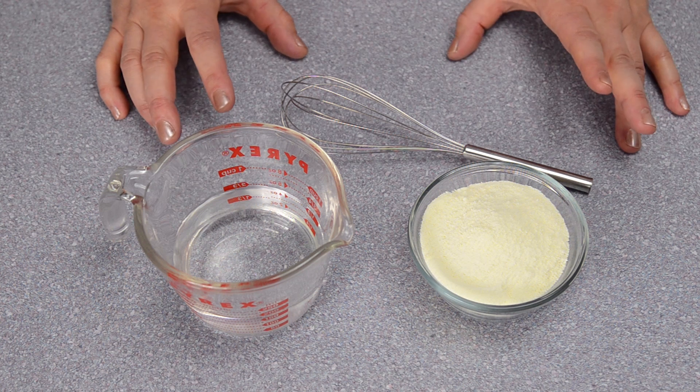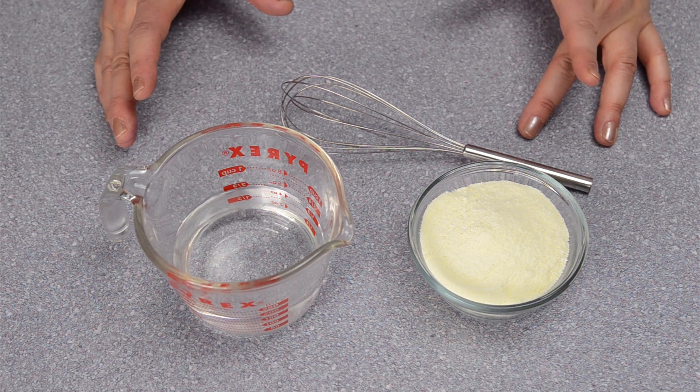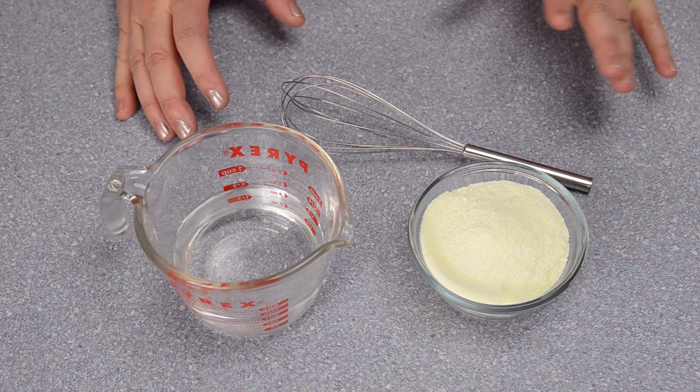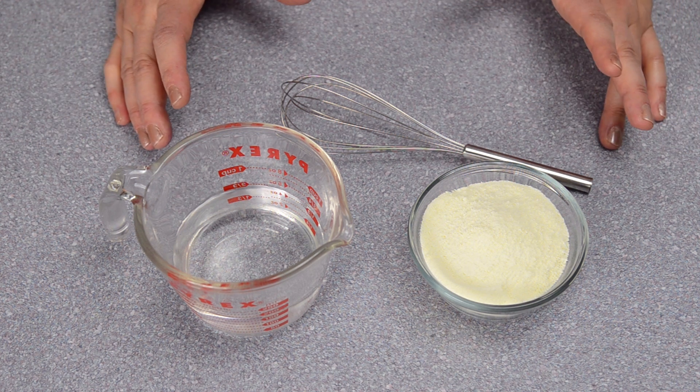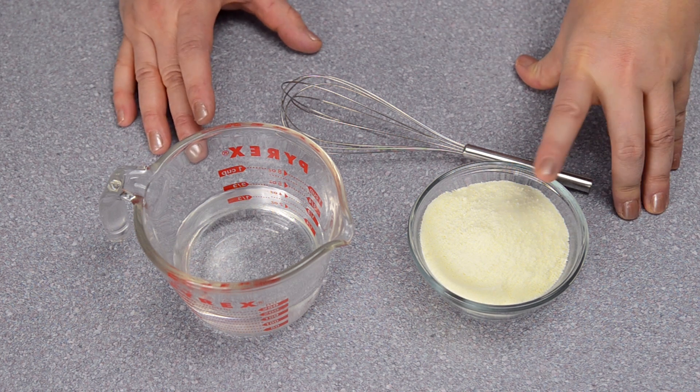Evaporated milk can normally be found in the baking aisle, but I've had a lot of questions about how you would make your own and where you can find it. Now I can find mine at Walmart, Target, like I said in the baking aisle, but something that's usually even more readily available is powdered skim milk.